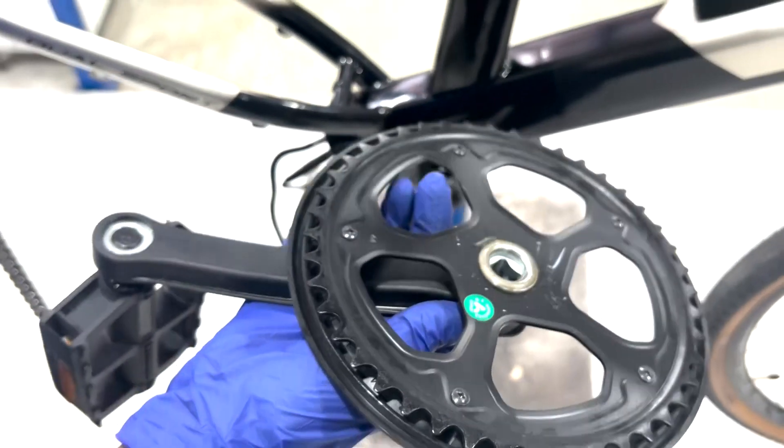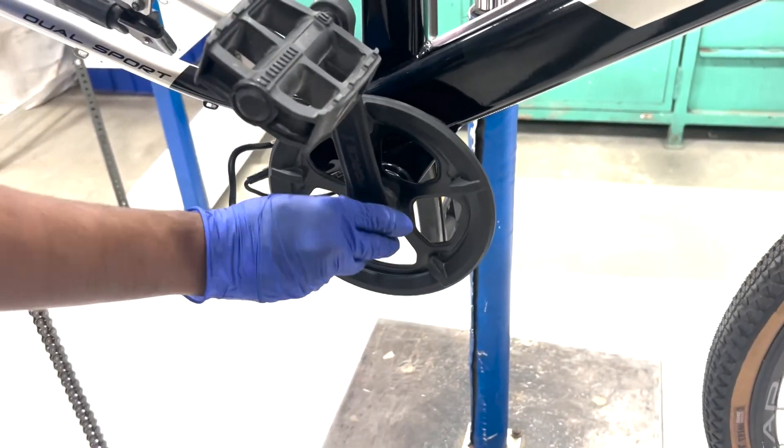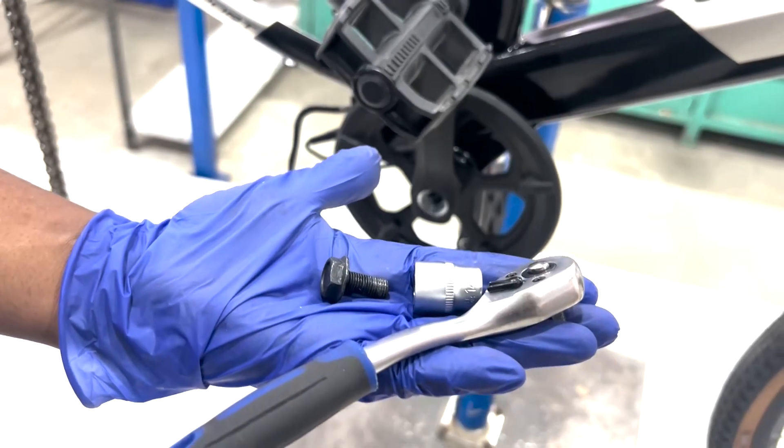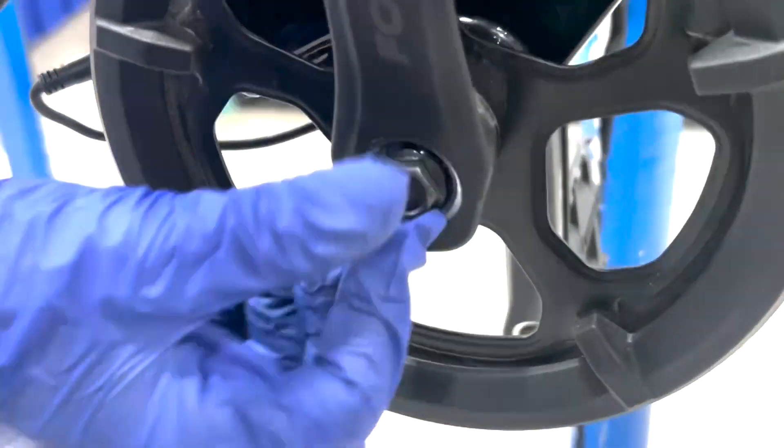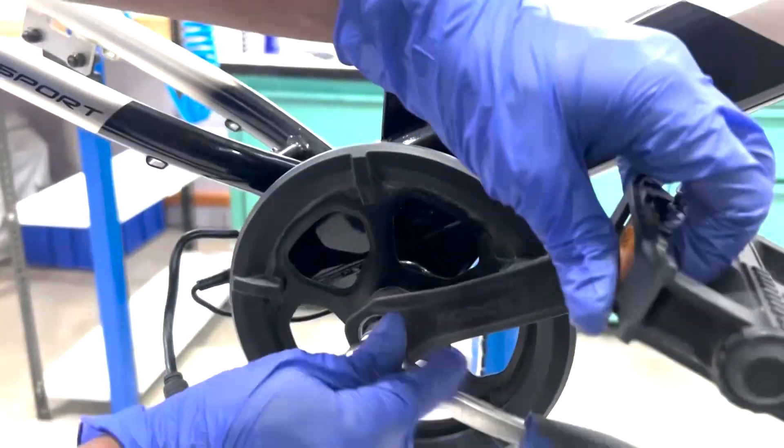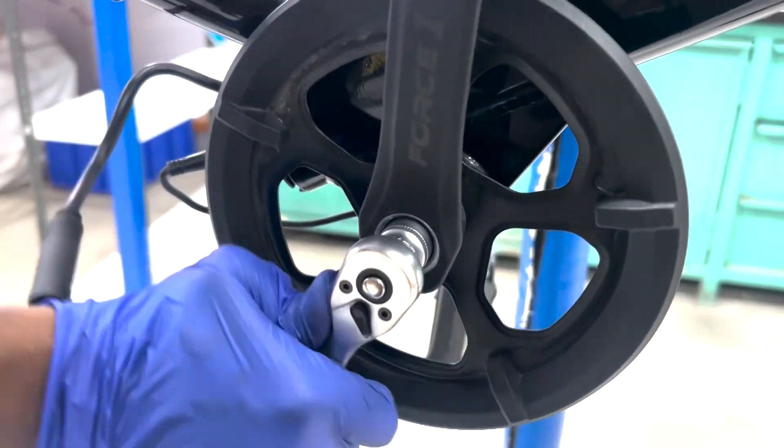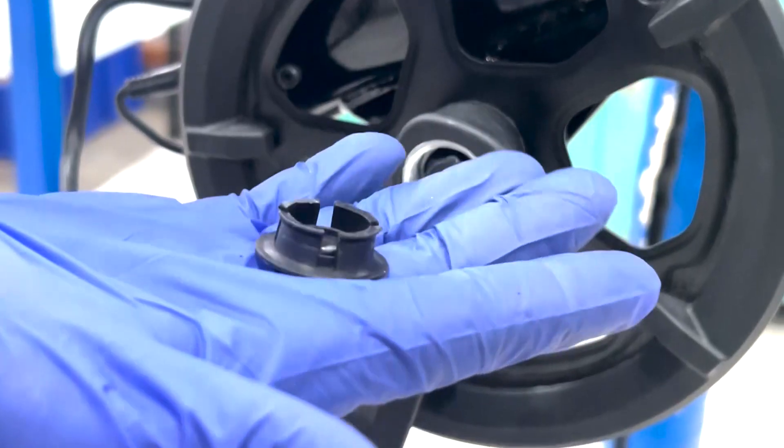Now, reattach the right crank on bottom bracket axle, 180 degrees to left and tighten the crank bolt. Don't forget to mount back the crank bolt cap.